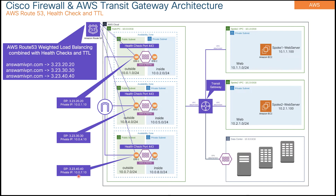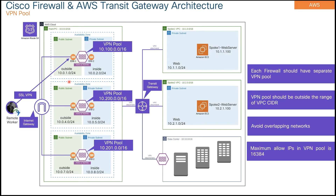Route 53 sends probes to my device to check whether it is healthy. If a device is not healthy, it is removed from the load balancing pool. So I have answamivpn.com pointing to three addresses, and Route 53 is responsible for doing complete load balancing for my SSL remote access VPN connection.